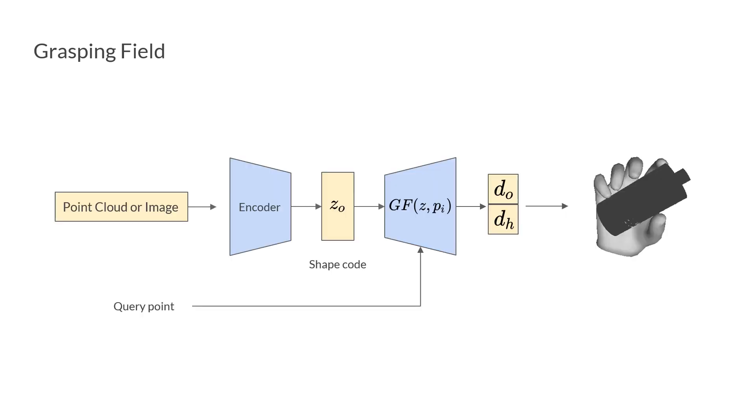To represent different shapes with a single network, the grasping field decoder also conditions on an encoded shape latent vector. The encoder can be changed according to the input.